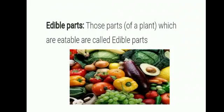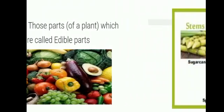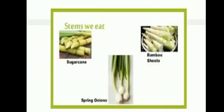For example, in a tomato plant only the fruit part is edible. Now we are going to discuss about the stems which are edible. Sugarcane, bamboo shoots, and spring onions are the stems which we eat.